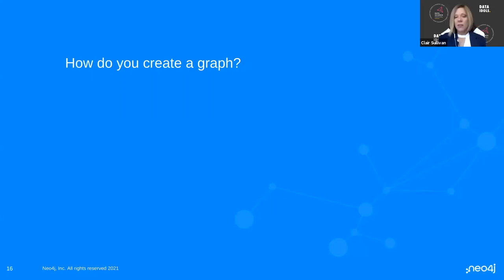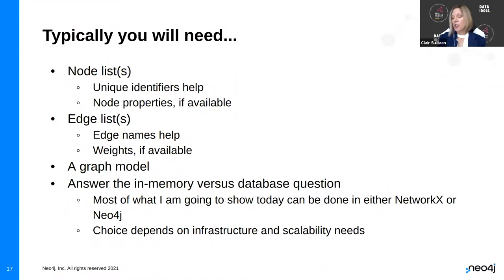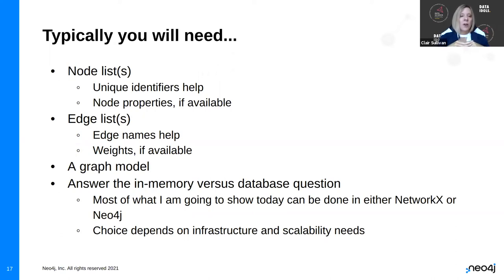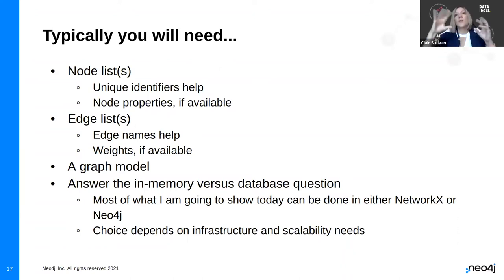How do you create a graph? You're going to need a few things. First, a node list — basically saying here's every node that's in my graph, and those nodes might have properties. Like: this node is a person named Claire — so we have a node label 'person' and a node property 'name: Claire.' Then we have an edge list. Maybe my edge list says who I work for: Claire works for Neo4j. So Claire, with node label 'person,' works for node label 'company' with name 'Neo4j.' What I just did is create a graph model.